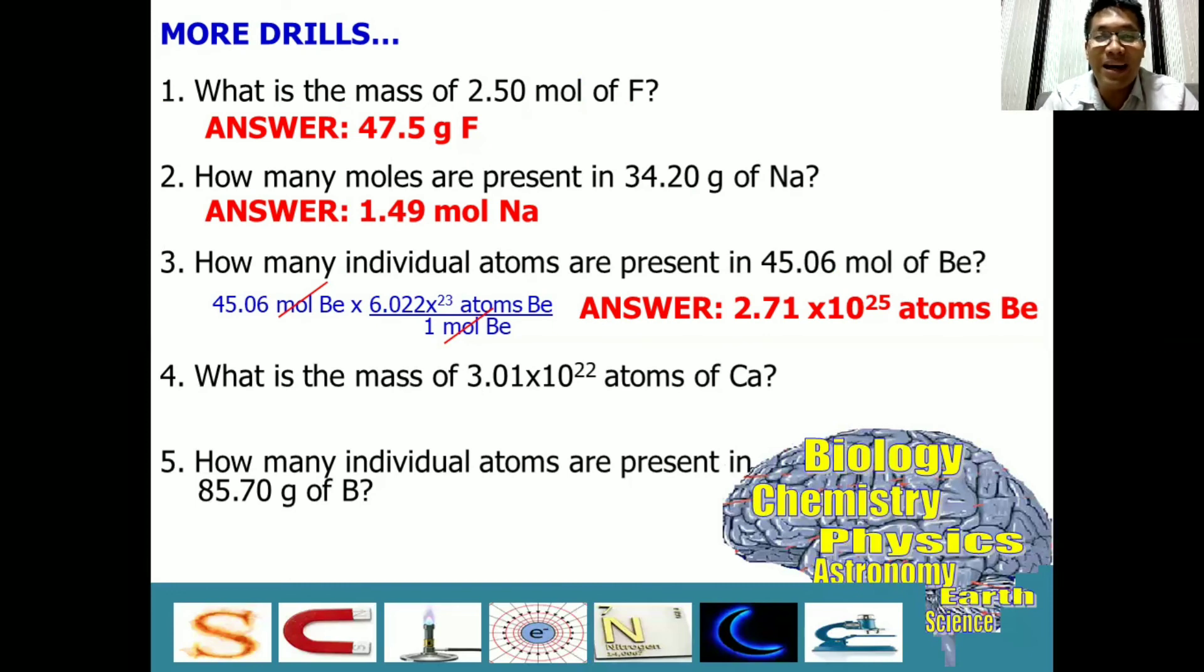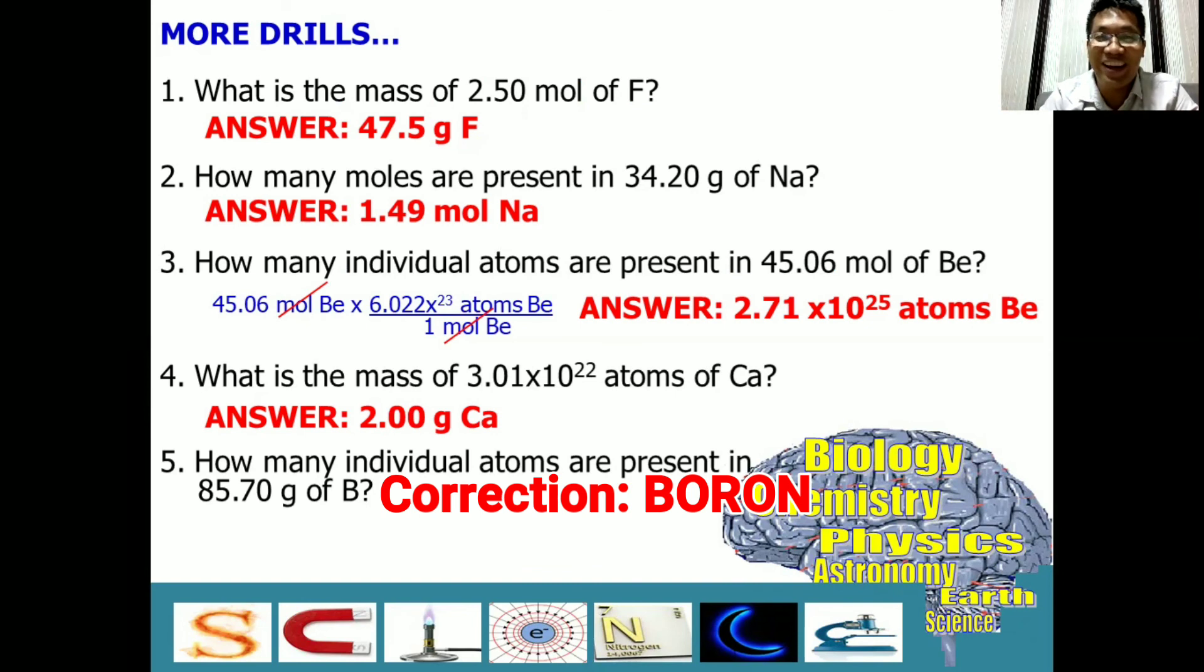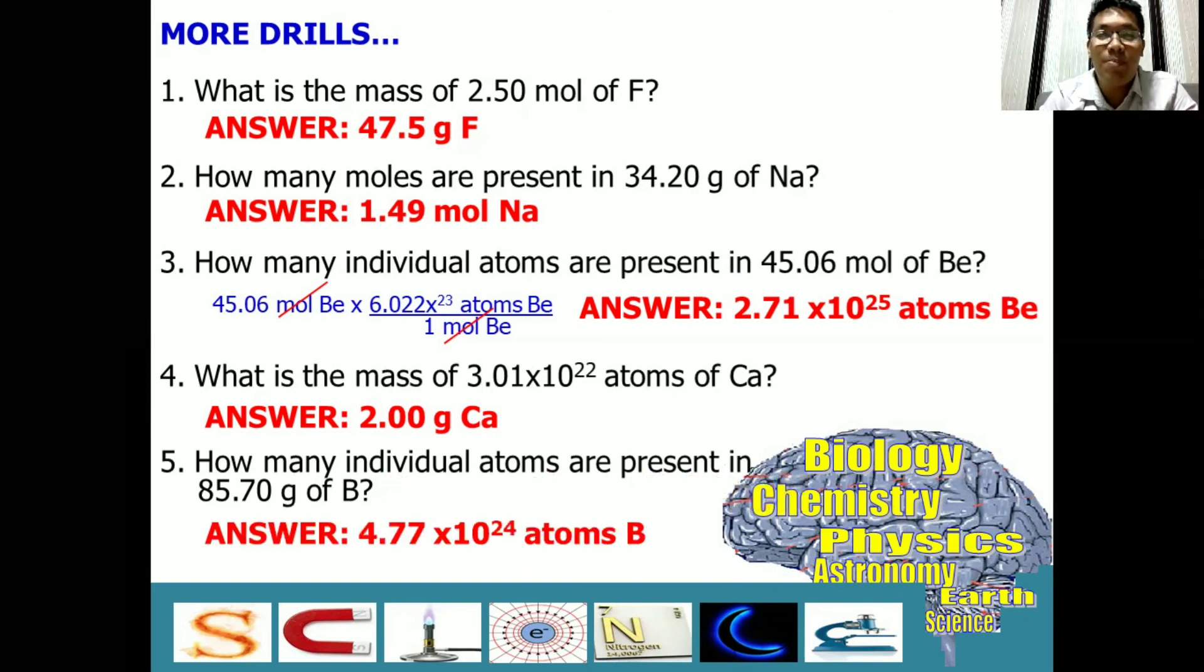Number four. What is the mass of 3.01 times 10 raised to 22 atoms of calcium? The answer is 2 grams of calcium. Number five. How many individual atoms are present in 85.70 grams of beryllium? And the answer is 4.77 times 10 raised to 24 atoms of beryllium. So what is your score? I hope you got a perfect score.